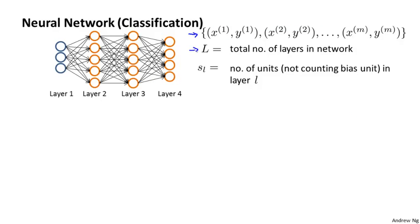I'm going to use uppercase L to denote the total number of layers in this network. For the network shown on the left, we would have capital L equals 4. And I'm going to use S subscript L to denote the number of units, that is the number of neurons not counting the bias unit in layer L of the network.